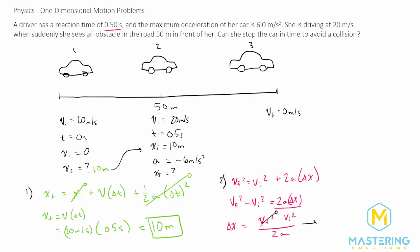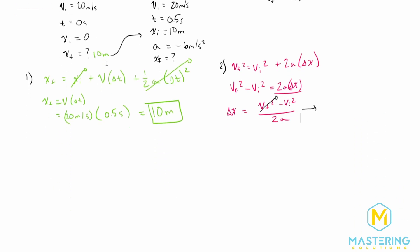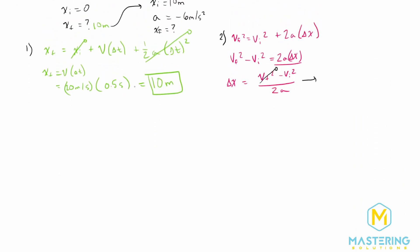So now if we simplify that a little further, we have delta x is equal to negative v initial squared divided by 2 times the acceleration.